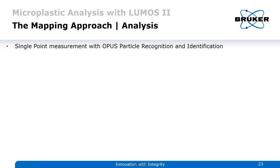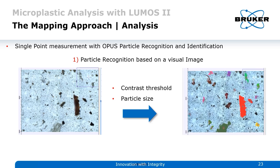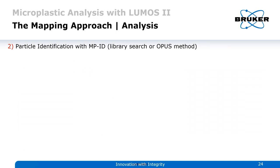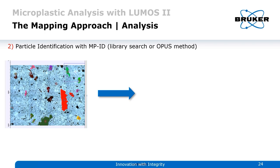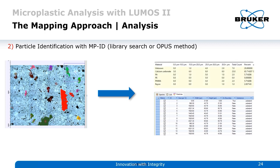When using the mapping approach, OPUS particle recognition finds all particles based on the visual image as a first step. We can set a contrast threshold to binarize the image and define a particle size range to look in. All individual particles fitting these criteria are identified and measured automatically. The second step is particle identification with the MPID functionality, which can be combined with library search or different OPUS methods, providing a list of particles, their identity, an overview of found particles, and statistical information.